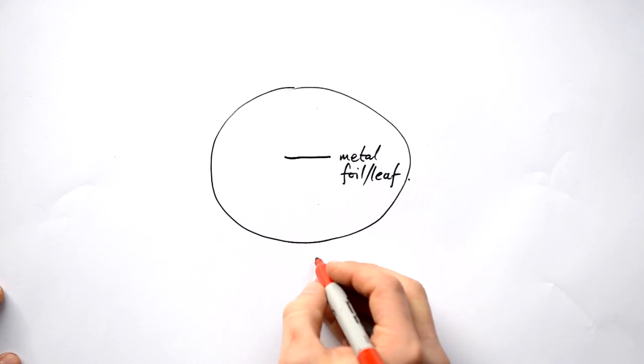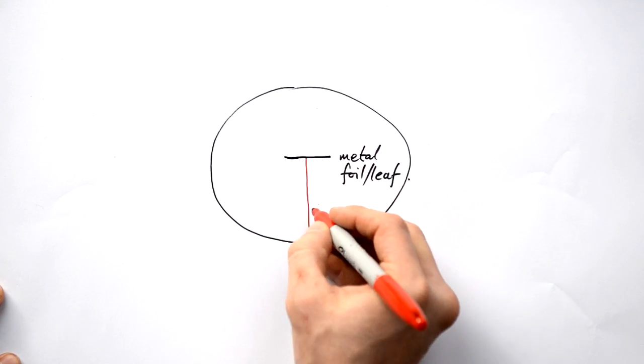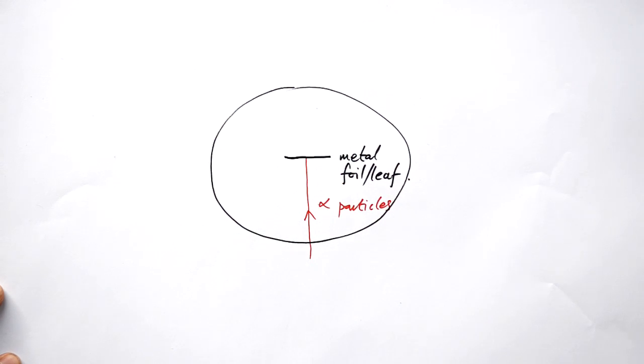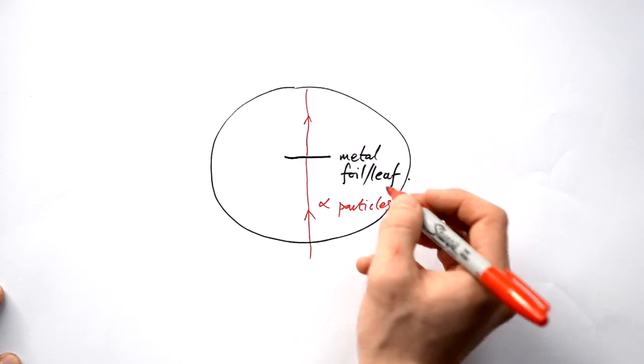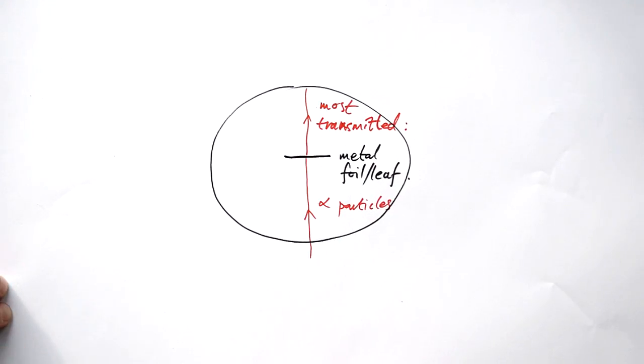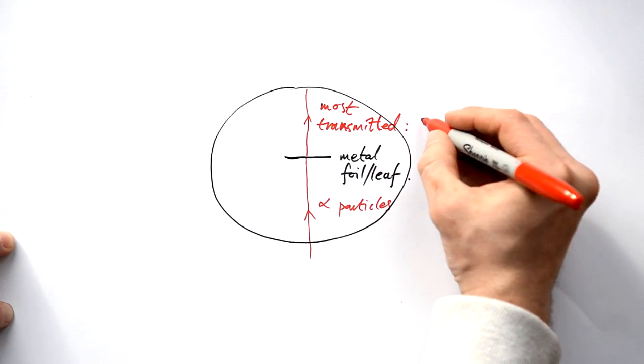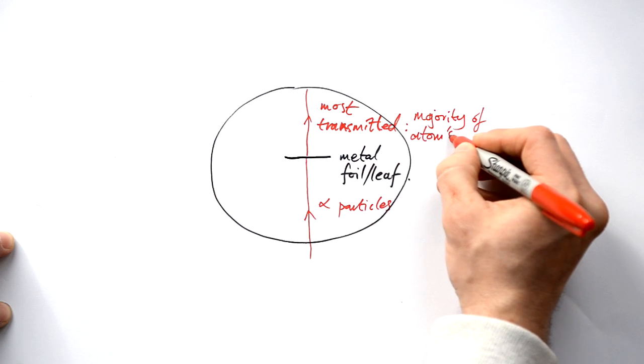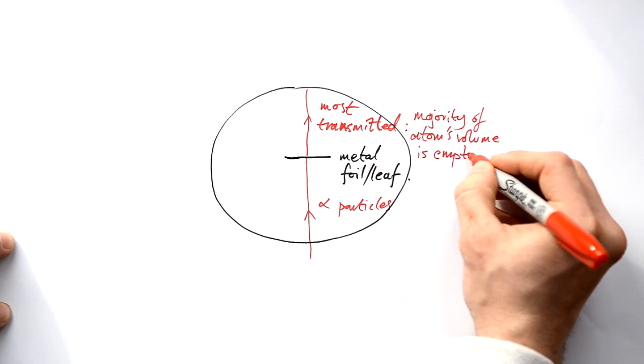What he did was fire alpha particles at this metal leaf. Don't forget that alpha particles consist of two protons, two neutrons, that's a helium nucleus. What he found was that most of the alpha particles went through, they were transmitted. What does that prove? That proves that the majority of an atom's volume is just empty space.